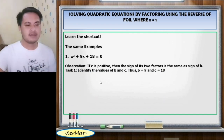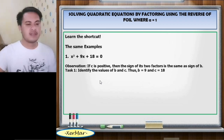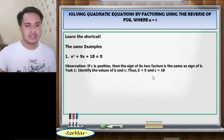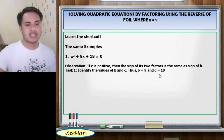Next, Task 1: Identify the values of b and c. Thus, b equals 9 and c equals 18, considering that a equals 1.